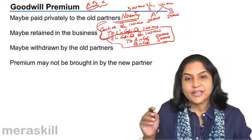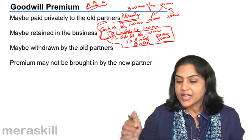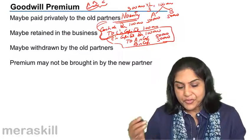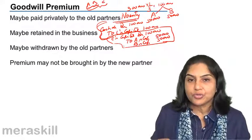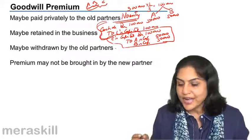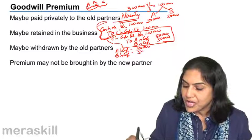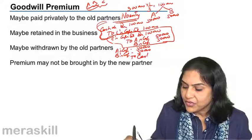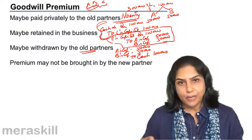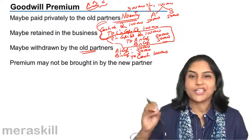When the premium is retained in the business, cash resources have increased by the 1 lakh brought in by C as goodwill premium. If this money is subsequently withdrawn by the old partners, we pass an additional entry: debit A's Capital Account and B's Capital Account (50,000 each) and credit Cash/Bank. This brings the cash resources back down as A and B withdraw the goodwill premium brought in by C.